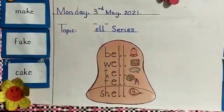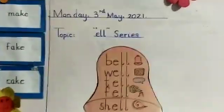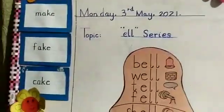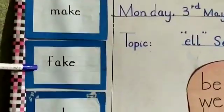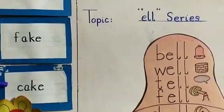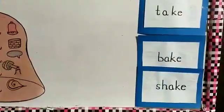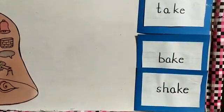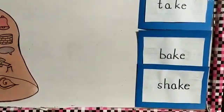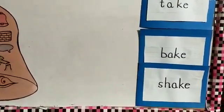Before we start today's series, we should revise our keywords. Ma-ek: make. Pa-ek: fake. Kha-ek: cake. Ta-ek: take. Ba-ek: bake. Sha-ek: shake.